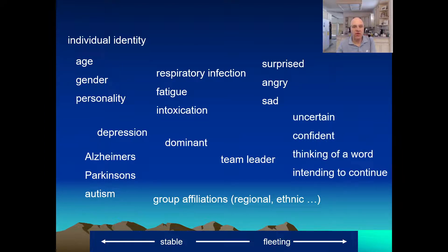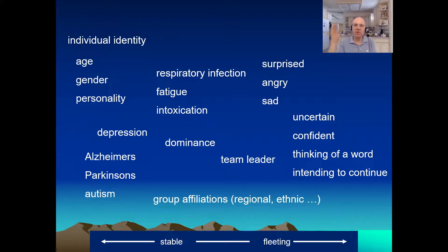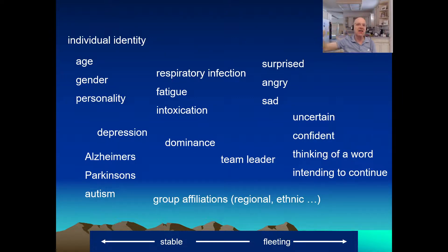Very transient things also show up — somebody uncertain or confident, in a tip-of-the-tongue state, intending to continue or yield the floor. While some of these are very mechanical or visceral, others are quite socially mediated. For example, gender: males tend to have longer vocal folds and lower pitch than females, but enacting gender through speech is very socially mediated.